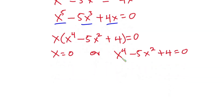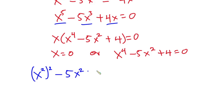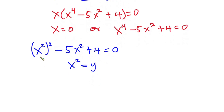Now let's focus on this equation. I'll be showing you two ways to factor this. The first method is to rewrite this equation as x squared, all squared, minus 5x squared plus 4 equals zero. I'm going to set x squared equal to y, so that wherever I see x squared, I put y. So we have y squared minus 5y plus 4 equals zero.